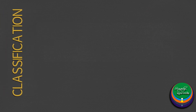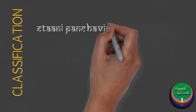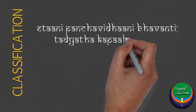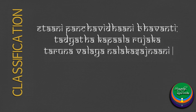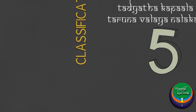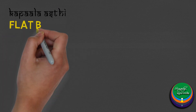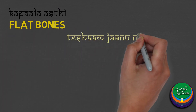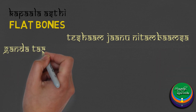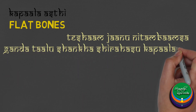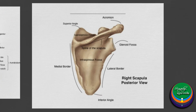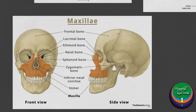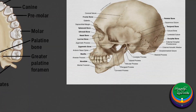Let us now move into the types of bones explained in Ayurveda. Acharya Sushruta explains five types of bones. The first is Kapalasthi or flat bones. They are flat and thin bones. They include the patella, pelvic bone, scapula, cheekbone, palatine bone, temporal bone and the bones of the skull.